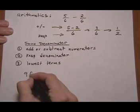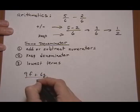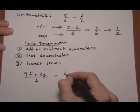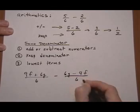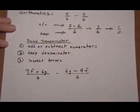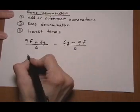So let's go ahead and I'm just going to rewrite the problem we're given. 9f plus 6g all over 6, take away 6g take away 9f all over 6. So we have a subtraction problem, so we're going to subtract the numerators.